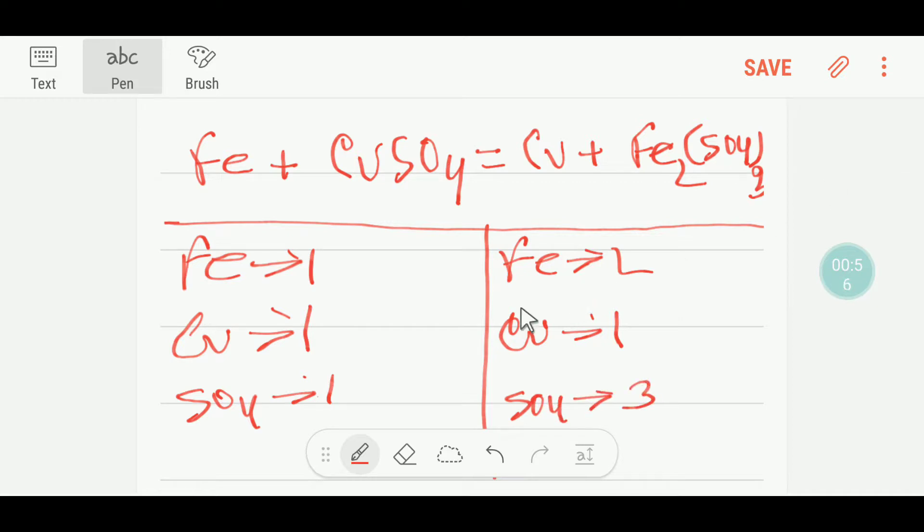Here we have one iron, so to balance the iron I can multiply by two. These two must come before this iron. So our iron is balanced, our copper is balanced already.